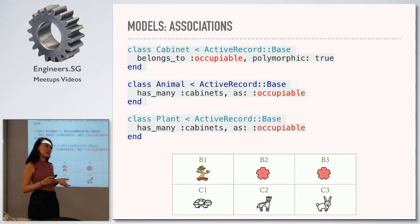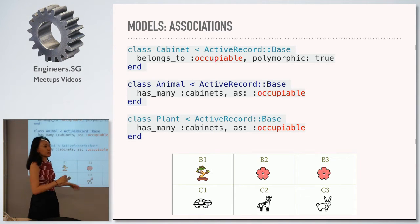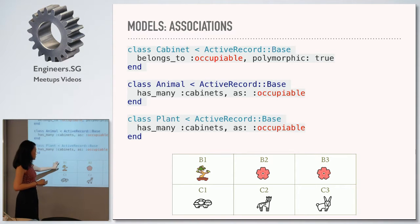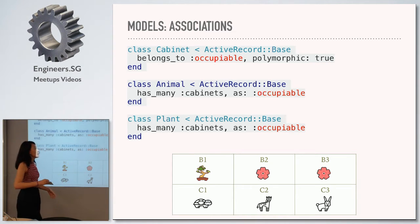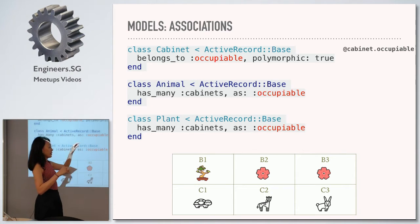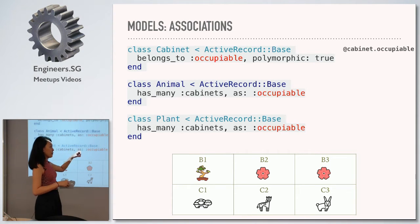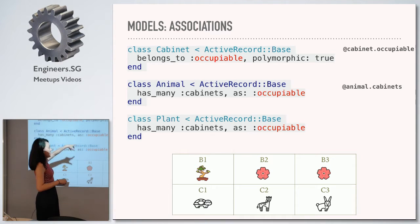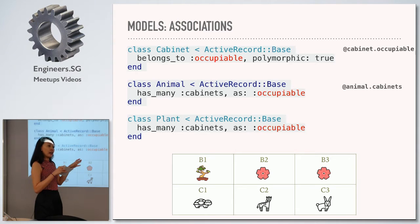A lot of it is about recognizing patterns and how you write things — this is just part of the syntax. So instead of before, when each cabinet could only have animals, here you can have either plants or animals. Previously you'd call `cabinet.animal`, but this time it's associated to occupiable, so when you call `cabinet.occupiable`, the data retrieves either a plant or animal depending on what `occupiable_type` is. And with a particular animal, if you call `animal.cabinets`, you retrieve what cabinets that animal can be found in.